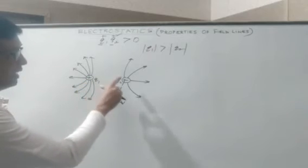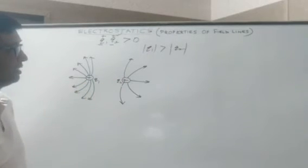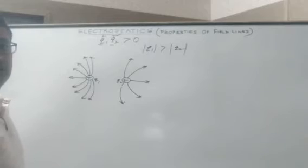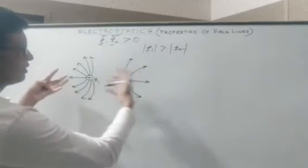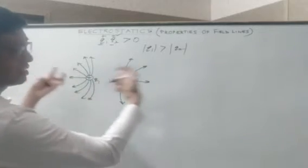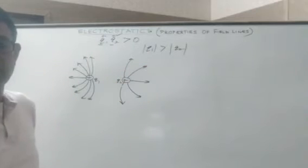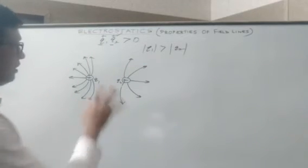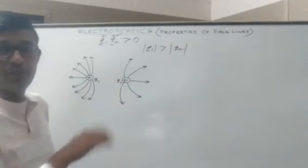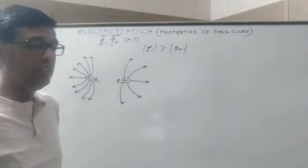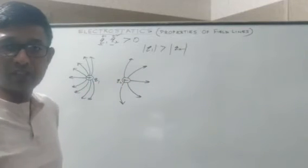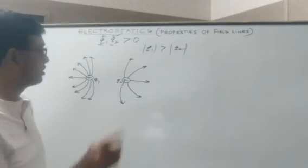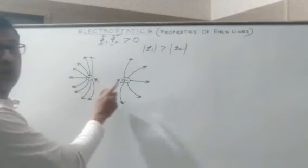The field lines tend to exert a lateral pressure upon each other. In this diagram the two charges are exerting lateral pressure upon each other. This is suggestive of the fact that there exists an electric force of repulsion between two like charges — that is another important property.